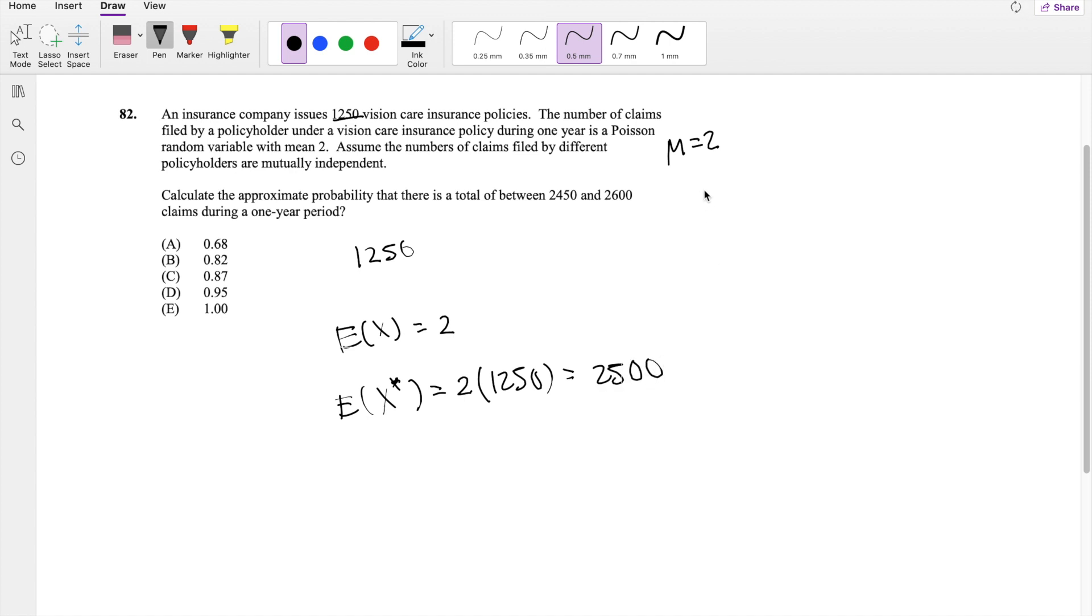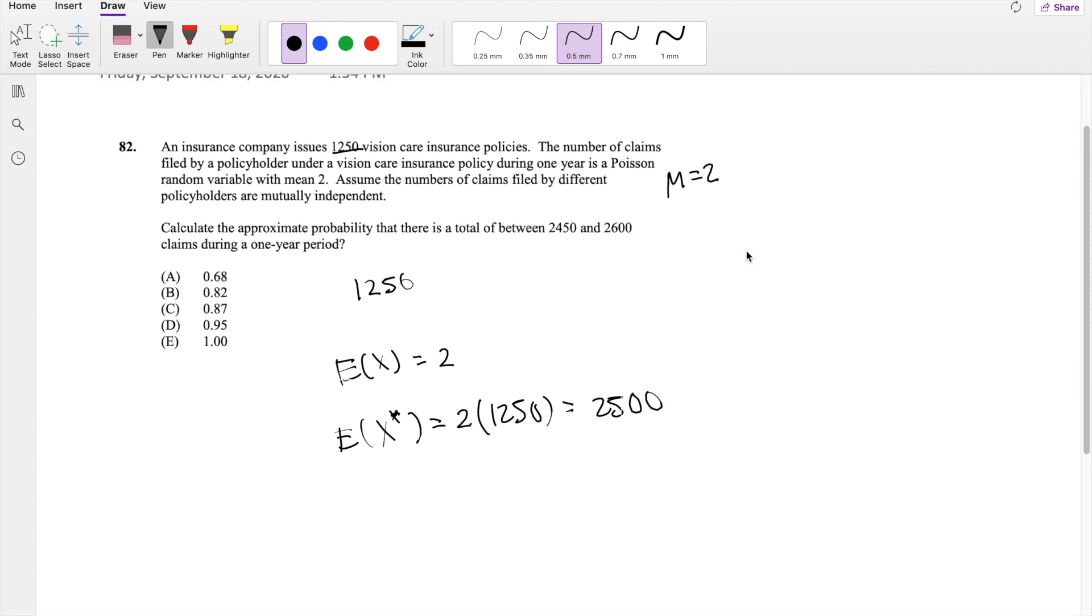And we also know about Poisson distribution is that the mean and the variance are the same thing. This is also going to be 2. So the variance of x is equal to 2. So then the variance of x star is going to be 2500 as well. And because 1250 is greater than 20, we can actually use the normal approximation.